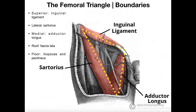If we look at the boundaries of the femoral triangle, we had the inguinal ligament superiorly, and then the medial boundary was the adductor longus muscle, one of the adductor group muscles, and then the lateral border is the sartorius muscle. As you get closer to the inferior part of the triangle, the sartorius is going to move over the adductor longus. The point where the sartorius moves over the adductor longus marks the bottom of the femoral triangle, but it also marks the start of the adductor canal, which moves inferiorly down toward the knee.